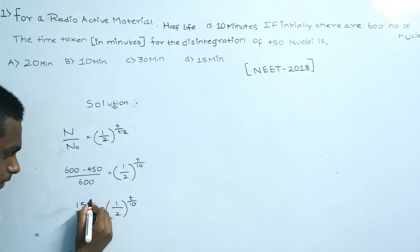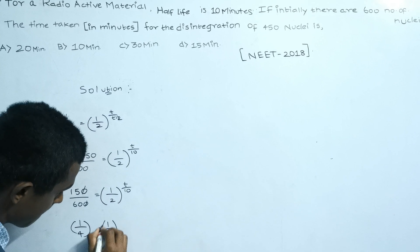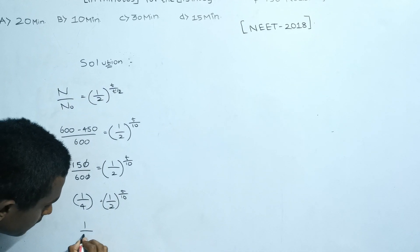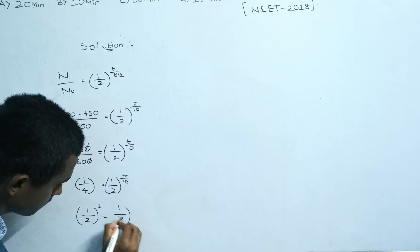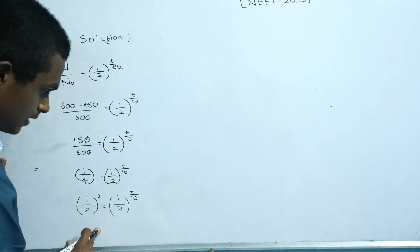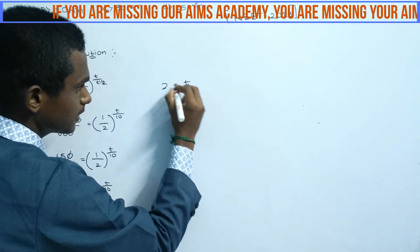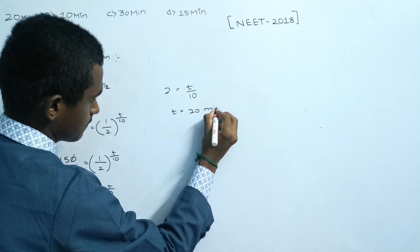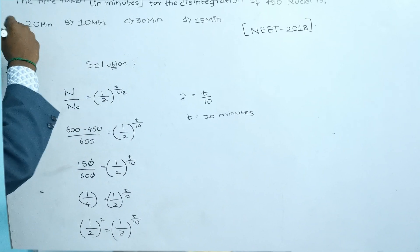When we cancel 150 by 600 we get 1/4 = (1/2)^(T/10). We can write 1/4 as (1/2)², so (1/2)² = (1/2)^(T/10). Now equating the powers, we get 2 = T/10. When we cross multiply, we get T = 20 minutes. So the answer is 20 minutes.